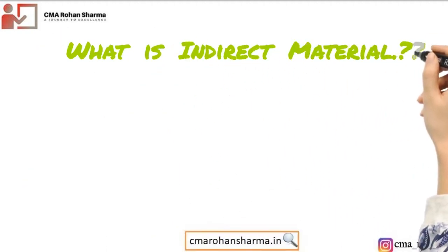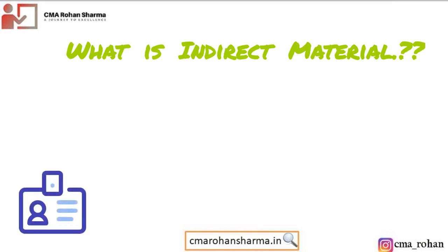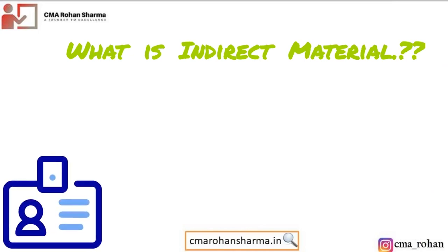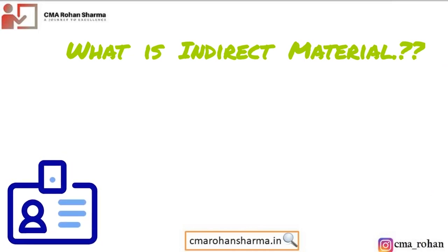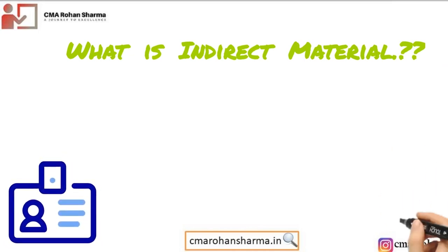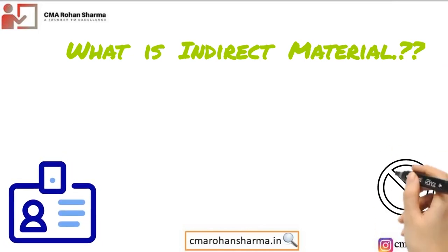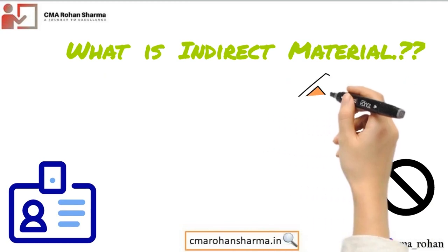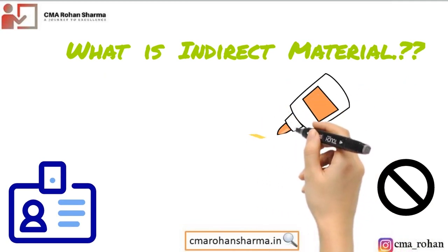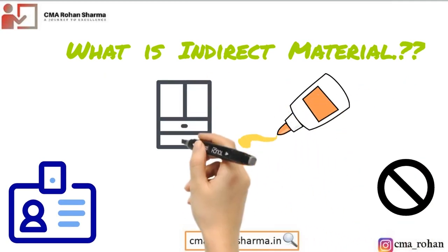What is indirect material? Indirect materials are those materials which cannot be directly identified in the final product. Example: glue in furniture.